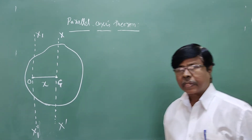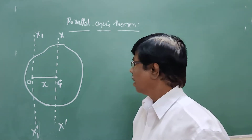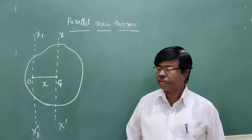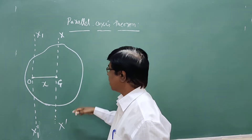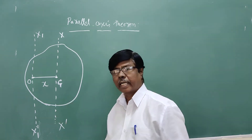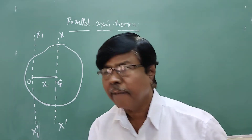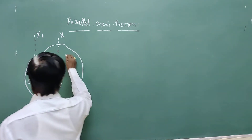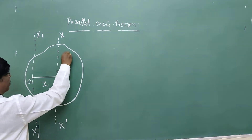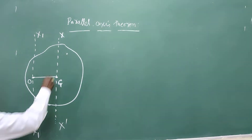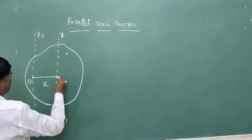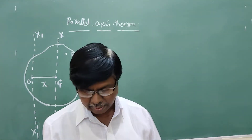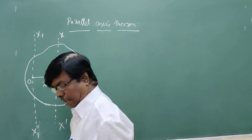Let us consider a particle. The body consists of a large number of particles, and the sum of all particles gives the total mass of the body or lamina. We consider a particle P of mass M somewhere in the body.